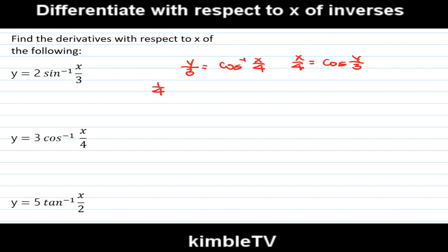1/4 dx/dy = -sin(y/3) × 1/3 = -1/3. It is the same as -1/3 √(1 - cos²(y/3)).